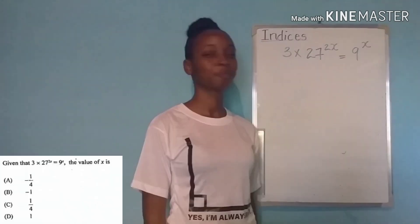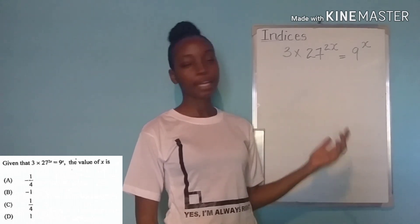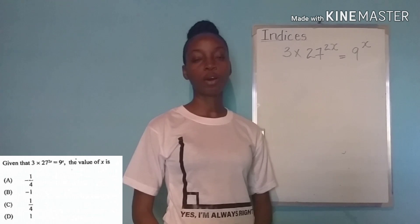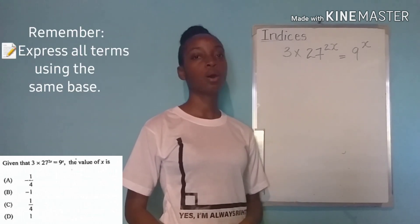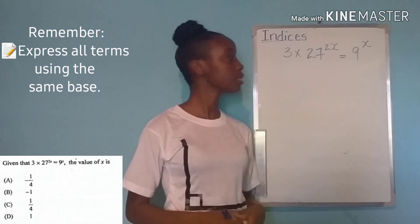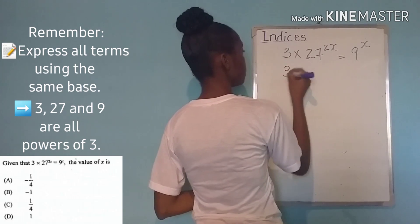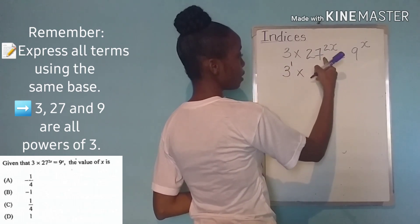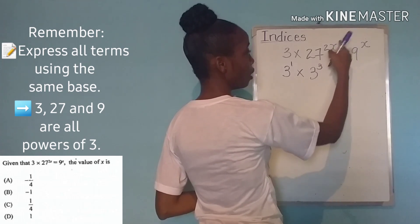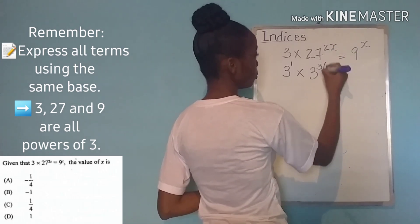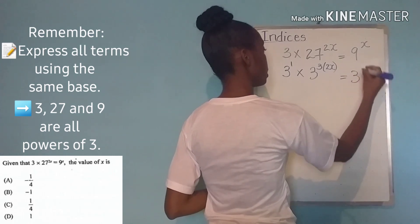We move to question two and again we are being asked to find the value of x. Once again to solve we need to ensure that all our terms have the same base. And so three is quite applicable in this case and so this is three to the first power. 27 is three to the third power. Again there is already a power so both powers are being multiplied. And nine is three squared.